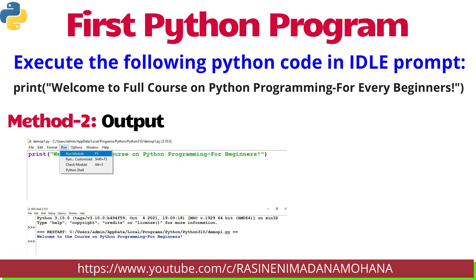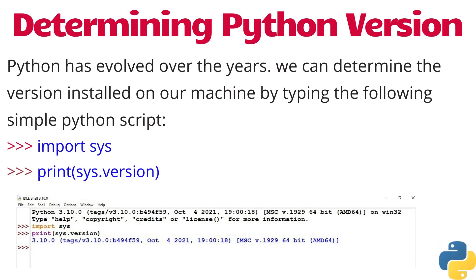Coming to determining the Python version — suppose after installation of Python you want to know the version installed. There are some steps to check the version. Python has evolved over the years; we can determine the version installed on our machine by typing the following simple Python script. First we have to import the sys module — the command is: import sys. Then the cursor moves to the next line, and you type: print(sys.version).